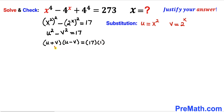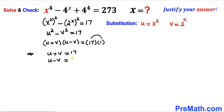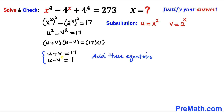We have the product of two factors on the left hand side and likewise the product of two factors on the right hand side. So therefore we conclude that u plus v equals 17 and u minus v equals 1. We are now ended up with a system of two equations. Adding these two equations, the positive v and negative v cancel, so we are ended up with 2 times u equals to 18.